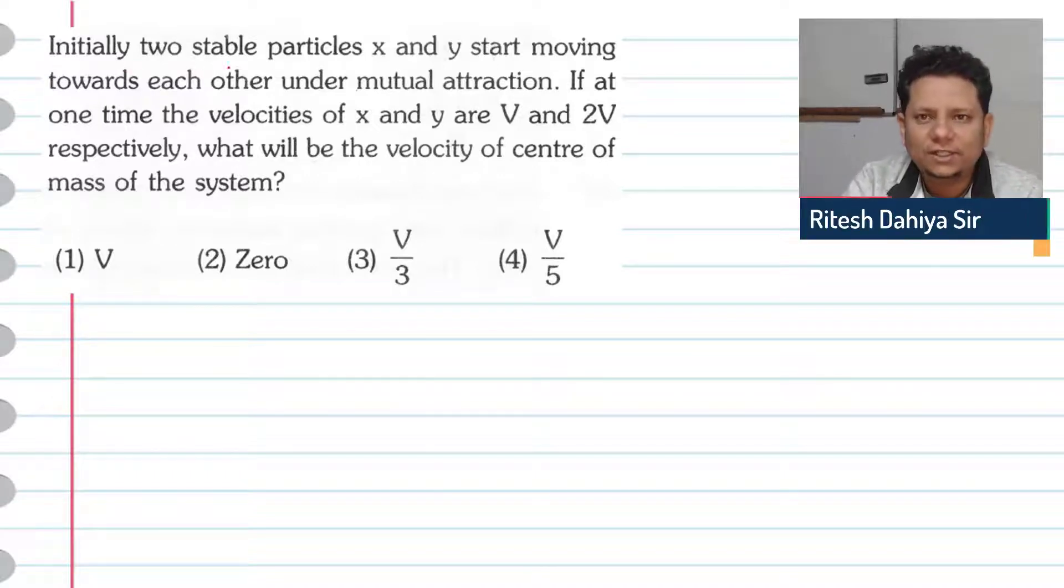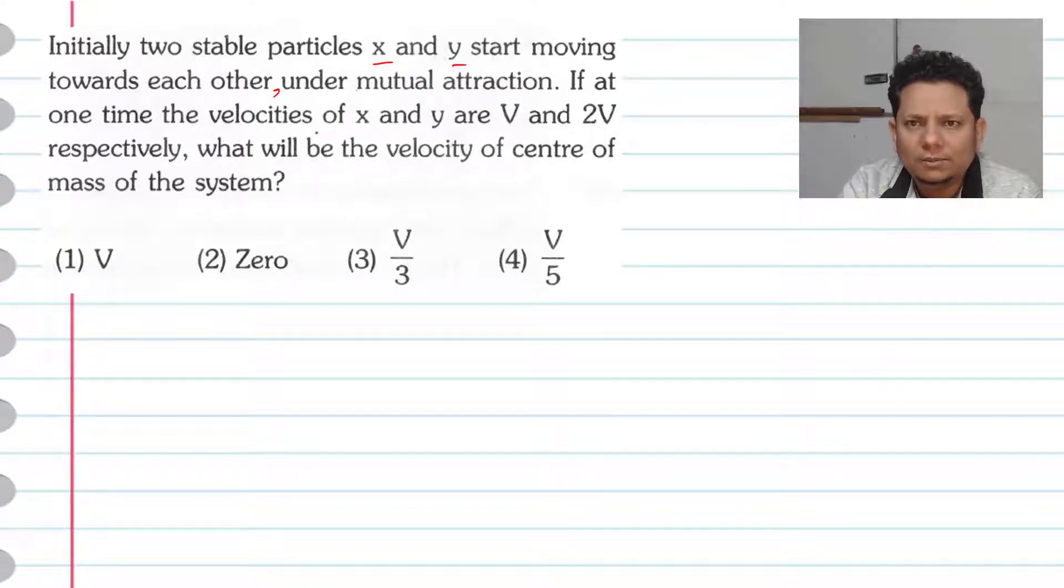Next question. The question says initially two stable particles X and Y start moving towards each other under mutual attraction. If at one time the velocities of X and Y are V and 2V respectively, what will be the velocity of center of mass of the system?